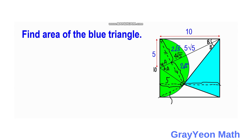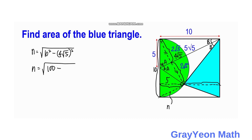To find the remaining length, we call it n and apply the Pythagorean theorem: n equals the square root of 10 squared minus (4 square root of 5) squared, which is the square root of 100 minus 80, giving square root of 20. Since 20 equals 4 times 5, n equals 2 square root of 5.